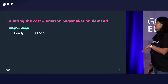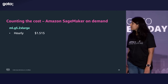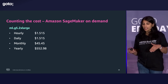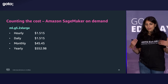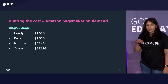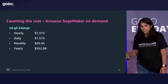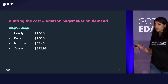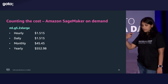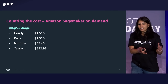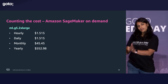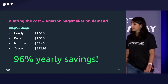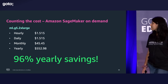Now let's count the cost of SageMaker on-demand. Because I'm creating the endpoint and shutting it down on demand, my monthly cost — assuming fairly low traffic — is reduced from $1,000 to $45. With Step Functions I'm able to convert my SageMaker endpoint to an on-demand serverless endpoint, resulting in 93–96% yearly savings.